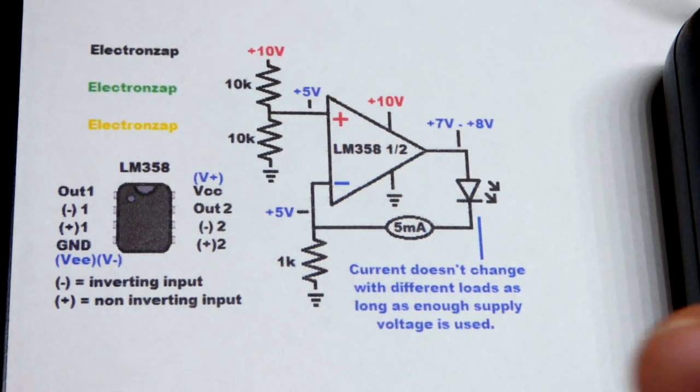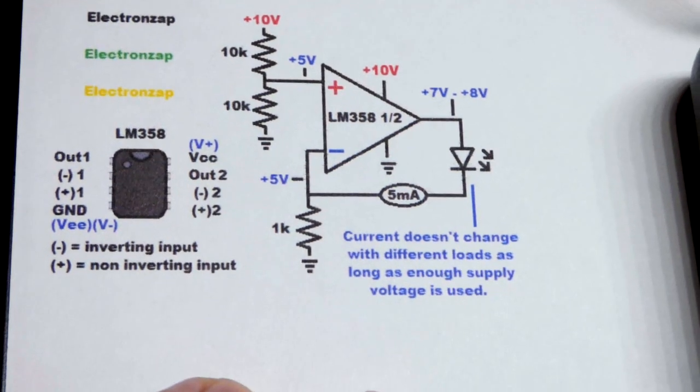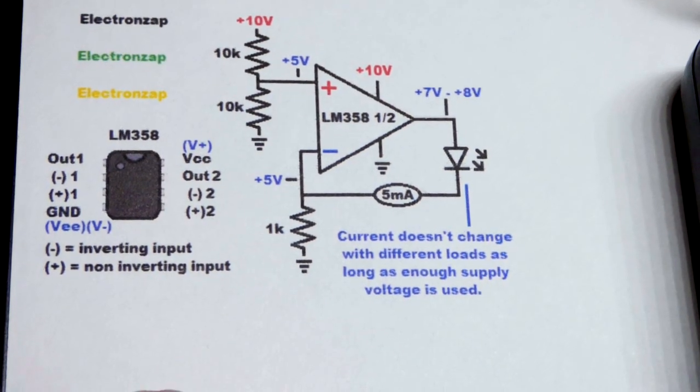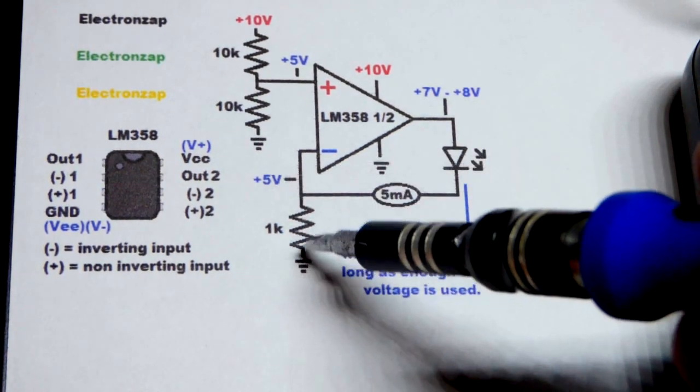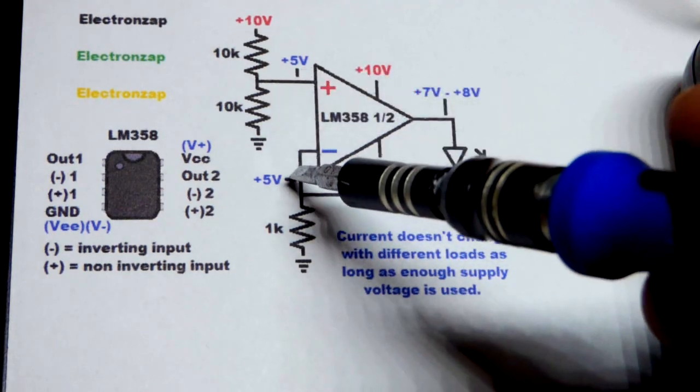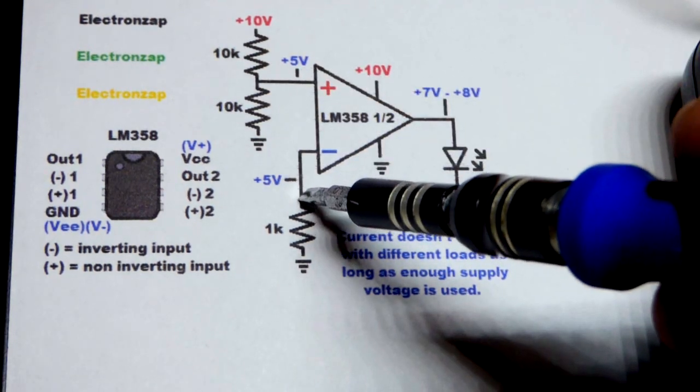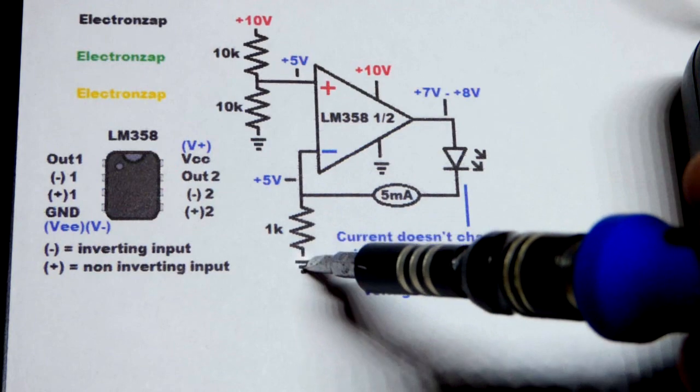So we can pick a resistor to go to ground, and it's going to have 5 volts across it, because we already talked about why. And at that point, that is what will set the current.